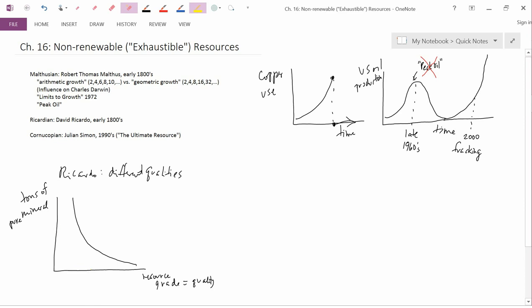But actually, if you go down to the low-quality deposits, there's a whole lot of mineral availability there. So this is a fairly optimistic idea that when you go to lower-quality or lower-grade deposits, it's going to cost you more to extract the mineral, but there's actually a lot of mineral there.